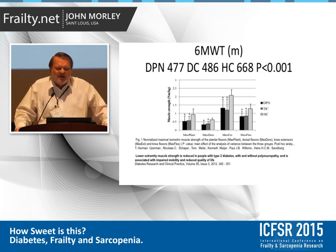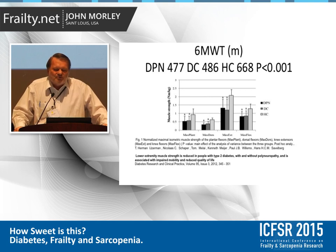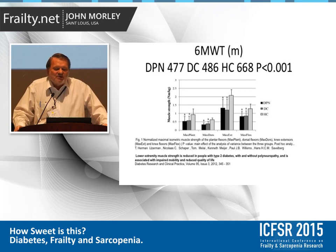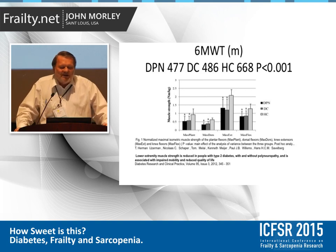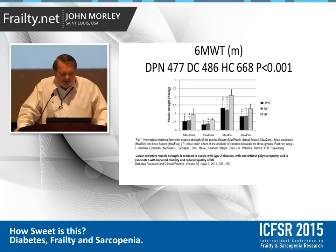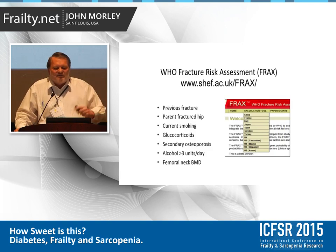In another study, a six-minute walk test showed that those with peripheral neuropathy managed 477 meters, those with diabetes 486 meters, and healthy controls — those without diabetes — managed 688 meters. Again, suggesting that diabetics have significant trouble with physical performance.